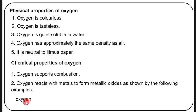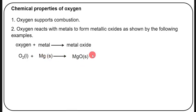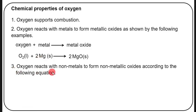For example: O₂(g) + 2Mg(s) → 2MgO(s). The equation is balanced by placing a 2 in front of magnesium and a 2 in front of magnesium oxide. Another chemical property is that oxygen reacts with nonmetals to form nonmetallic oxides.